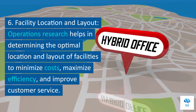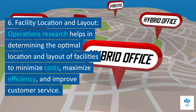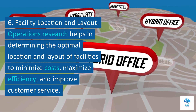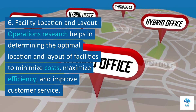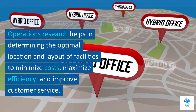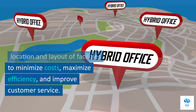6. Facility Location and Layout: Operations Research helps in determining the optimal location and layout of facilities to minimize costs, maximize efficiency, and improve customer service.